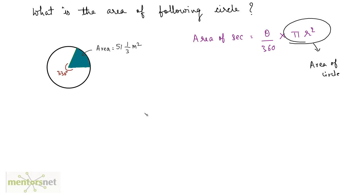So let's find out the area of a circle. Let's find out the formula for that. Area of circle will be equal to 360 by theta times the area of sector. So what is this theta?